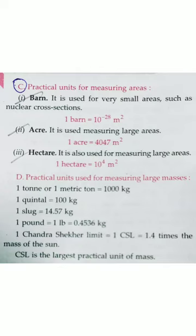Barn is used for very small areas, such as those of atoms or molecules. Acre and hectare are used for large areas. For measuring large masses, the units are ton, quintal, slug, pound, and Chandrasekhar limit.